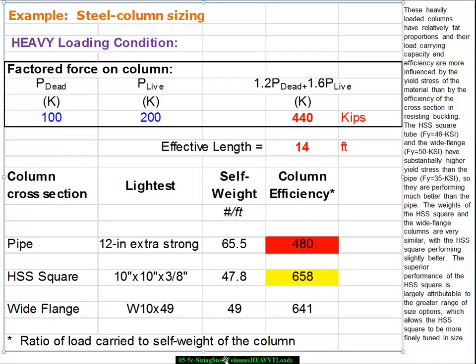Now to sort of summarize where we are, we have very high loads. As a consequence we're getting columns with large breadth. As a consequence we're tending towards fat proportions rather than slender.